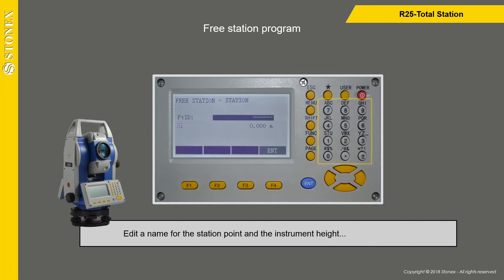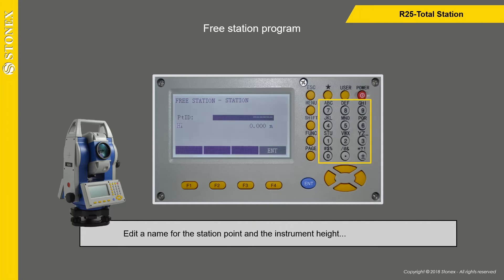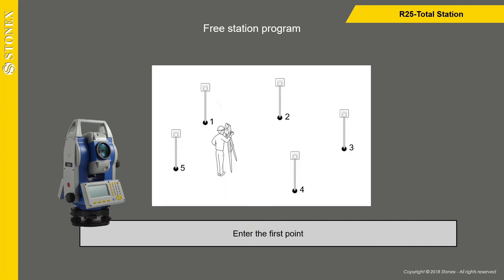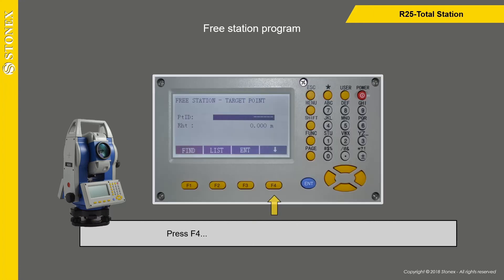Edit a name for the station point and the instrument height, then press F4 key. Enter the first point and press F4.